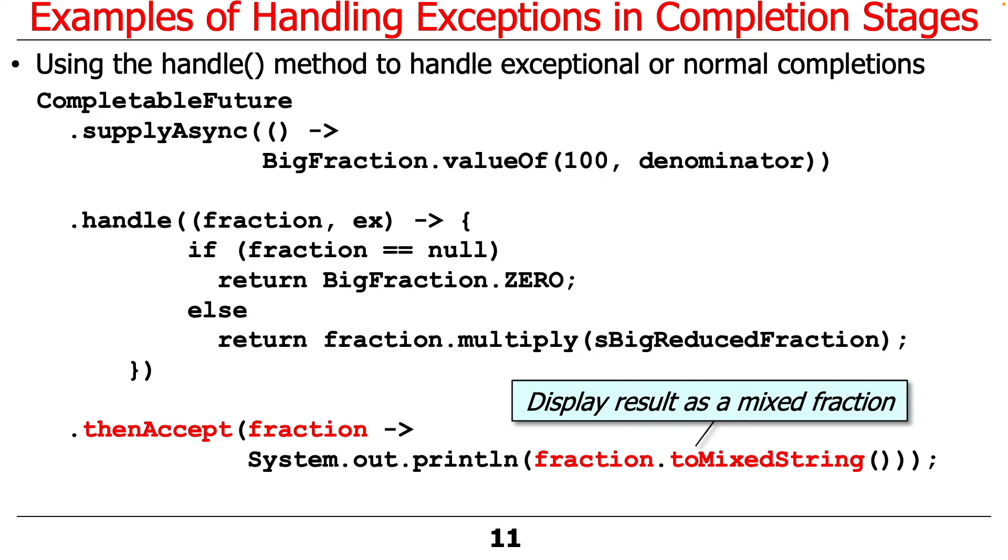So that's the first approach we're going to look at. Key thing to remember, it can handle both cases, both errors and normal processing, and also remember that it swallows the exception, so it won't continue to percolate up the chain.